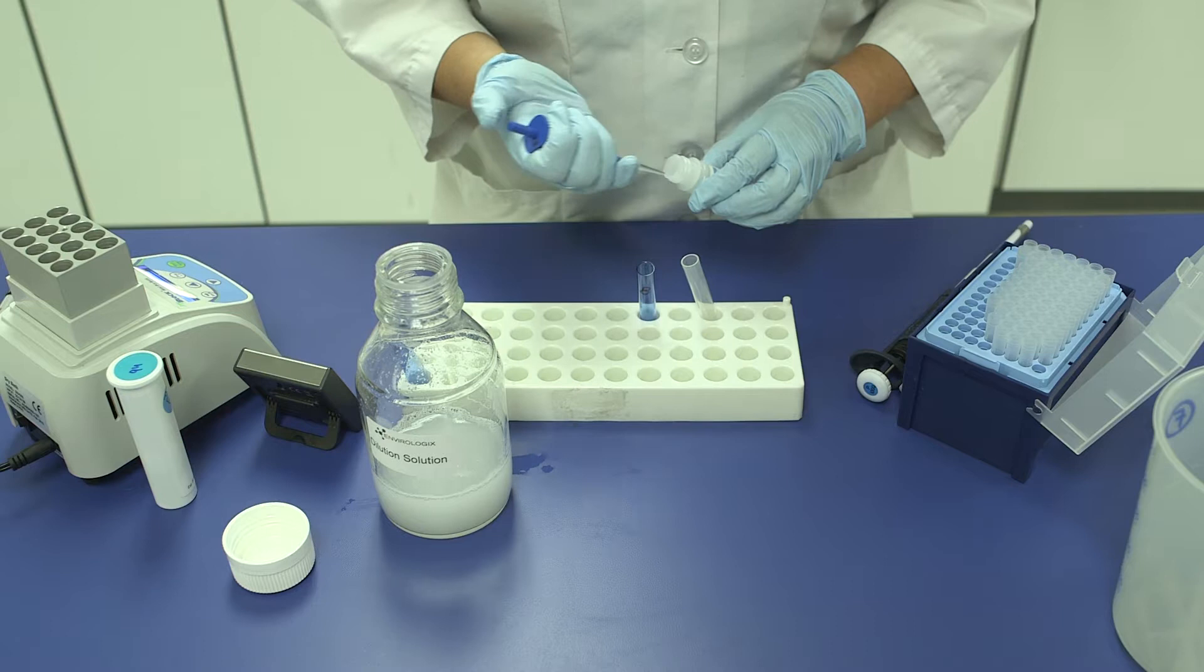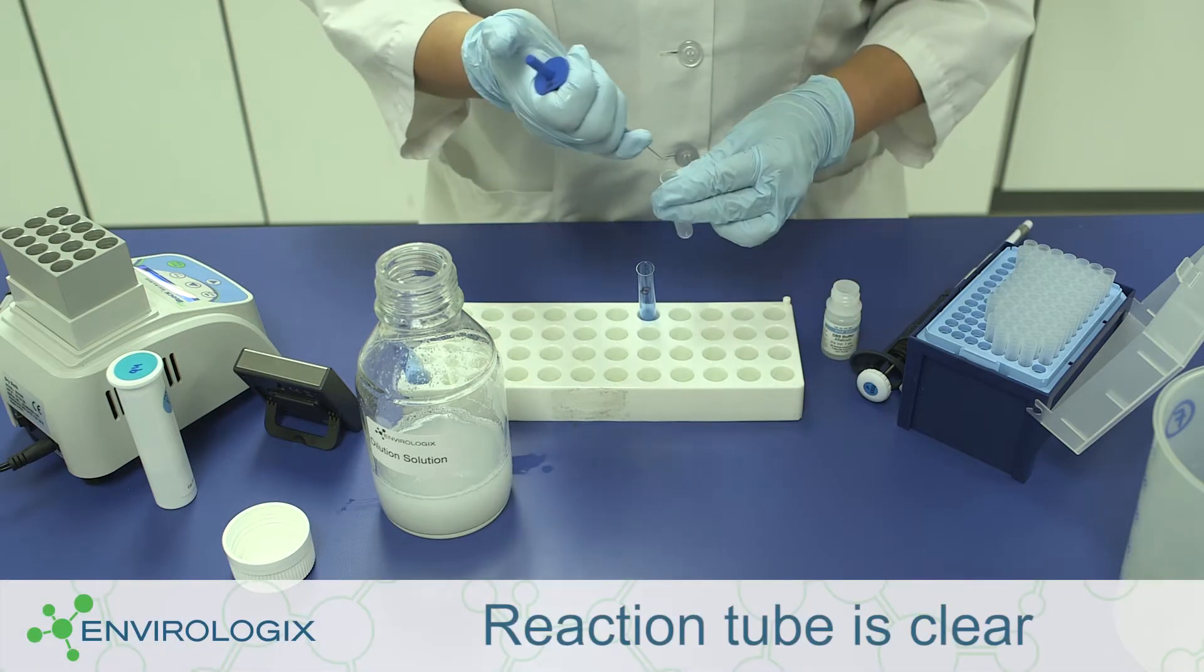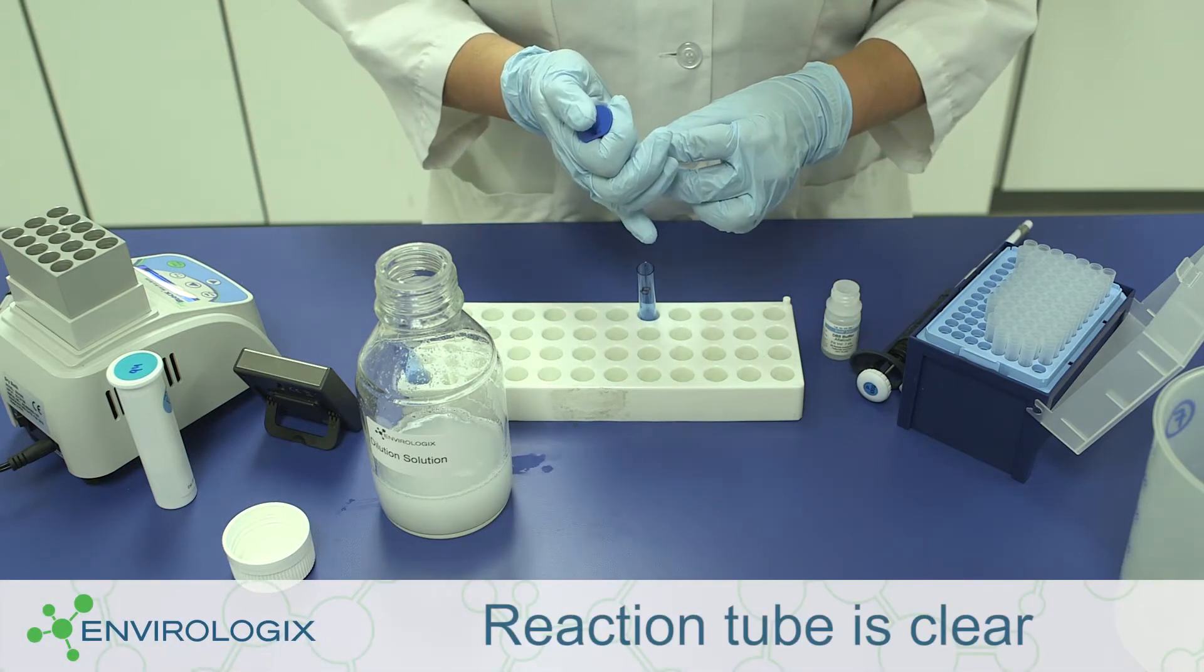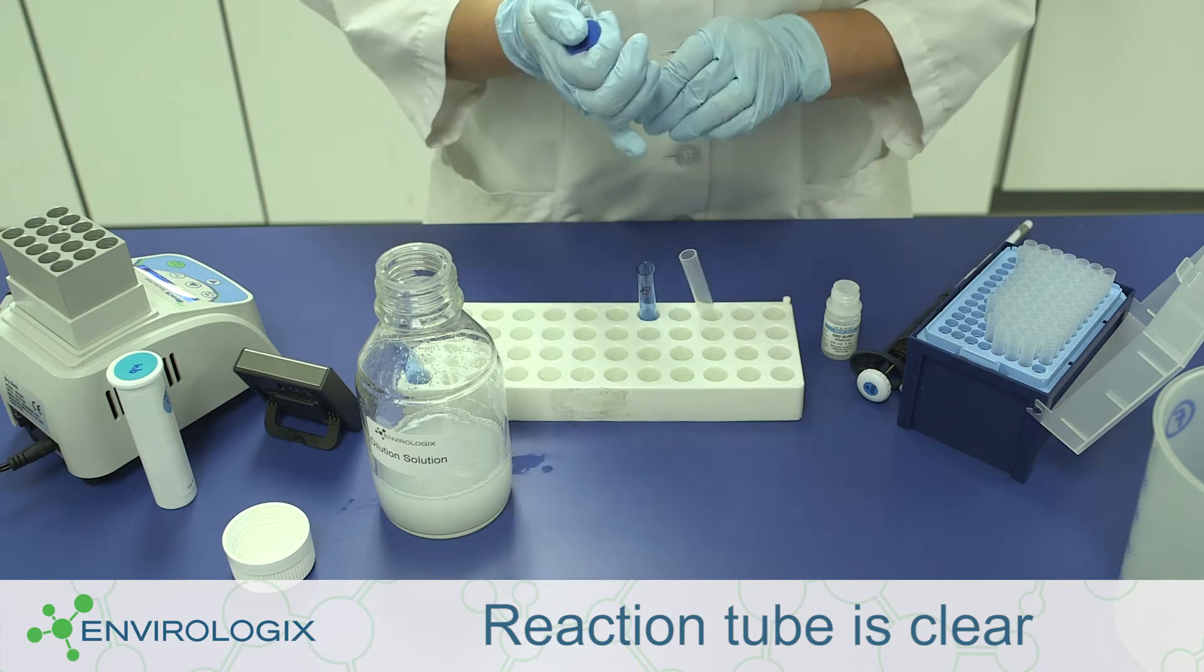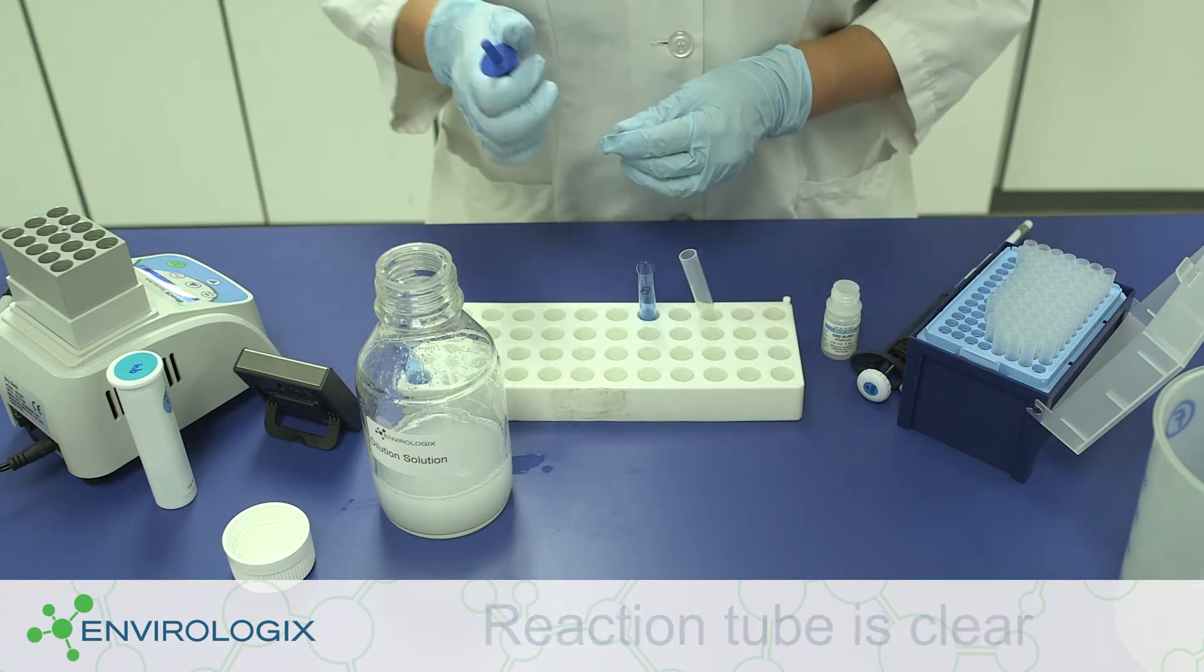Step 2. Pipet 100 microliters of DB5 buffer and 100 microliters of the diluted extract from Step 1 into a new reaction tube and mix well.